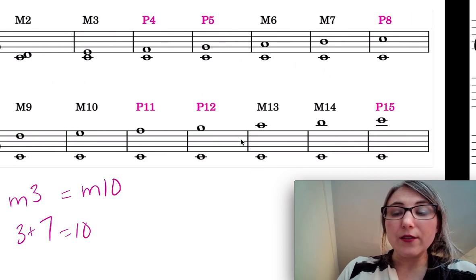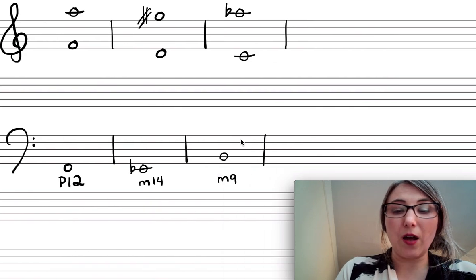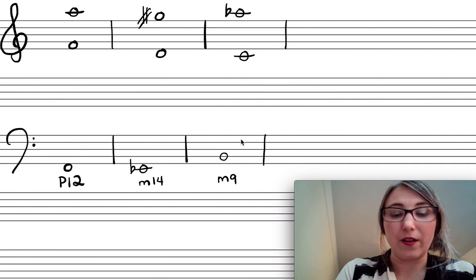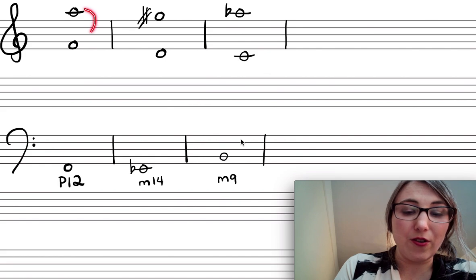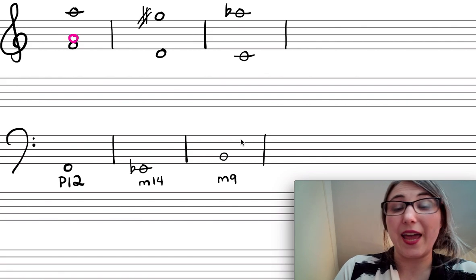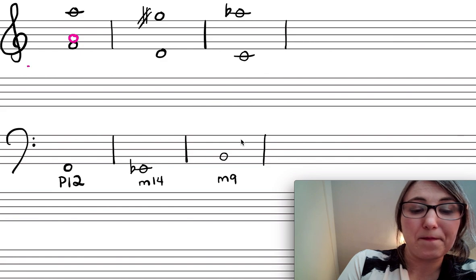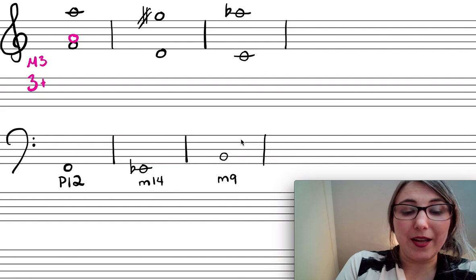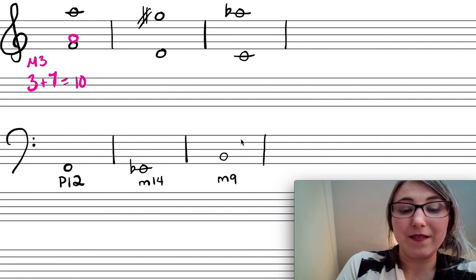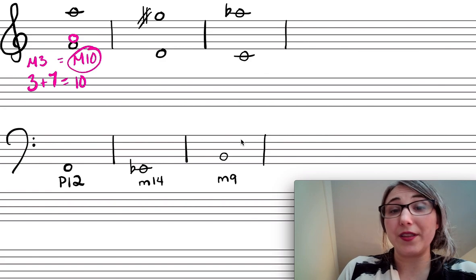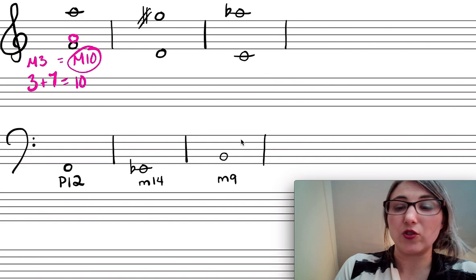Now let's practice identifying compound intervals. I'll reduce the octave out by scooting this A down an octave and figuring out the simple interval first. From F up to A is a major third, so the compound version is 3 plus 7 equals 10 — therefore this is a major 10th. Keep the quality the same and add seven.